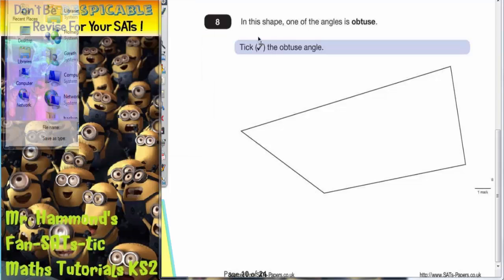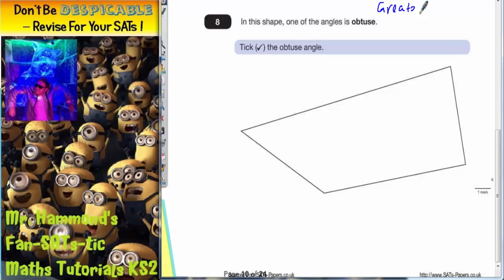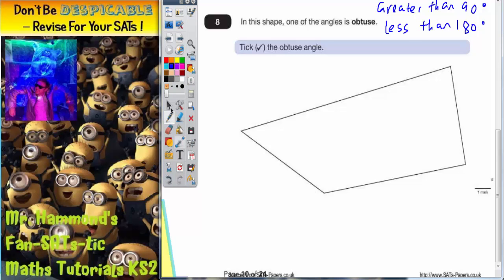Question 8. In this shape one of the angles is obtuse. Just to remind you, obtuse means greater than 90 degrees but less than 180 degrees. So we're looking for an angle that's bigger than 90 degrees.